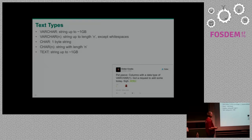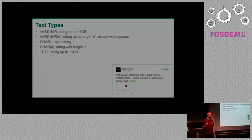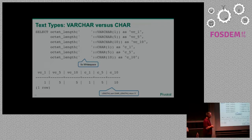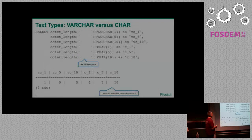If you use VARCHAR or TEXT, you can store strings up to roughly one gigabyte. If you specify CHAR without any length specification, it's actually just one byte — probably not what you want. With CHAR, you want to specify a length. VARCHAR length is optional and does not include trailing whitespaces. If you cast five whitespaces to VARCHAR(5) and VARCHAR(10), they all end up with five whitespaces. But if you cast to CHAR(10), Postgres fills up whitespaces to the specified length.